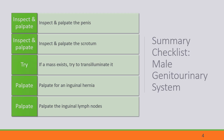When performing your objective assessment, you start with inspection and palpation of the penis and then the scrotum. If there is a mass present, you could transilluminate it — this would be more common at a higher level like nurse practitioner level during a full physical examination. You can palpate the inguinal rings for hernia and then palpate the inguinal lymph nodes.